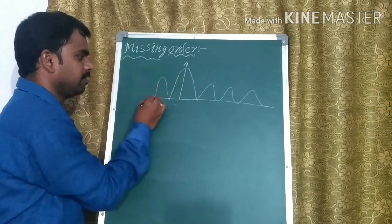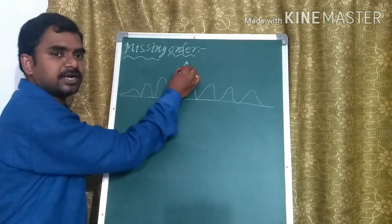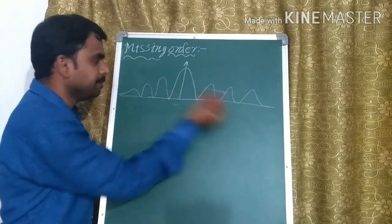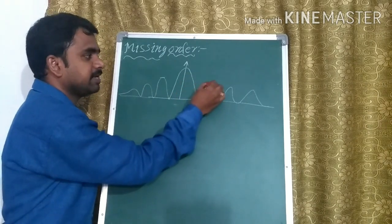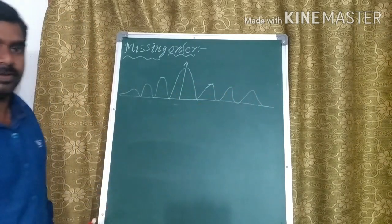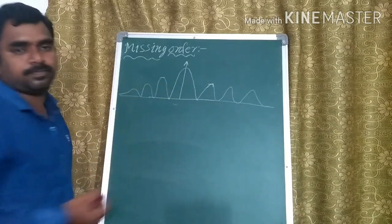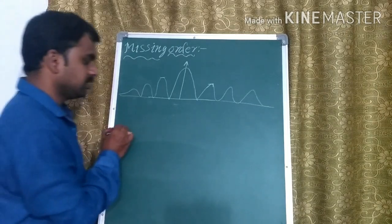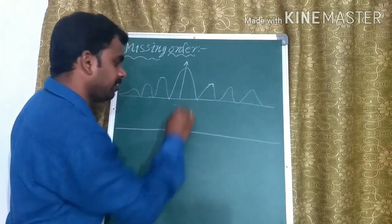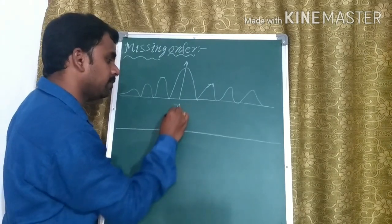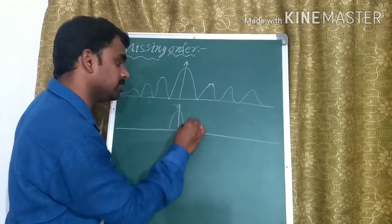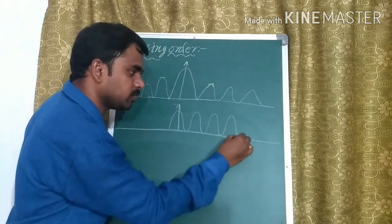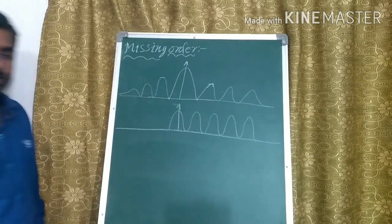The intensity varies like this. This is called as central maxima, this is called as minima, these are called as minimas. These are called as secondary maxima, third, and so on. This is the diffraction pattern. Same like that, if we take the interference pattern, all the bright fringes have maximum intensity and also the same intensity, and all the dark fringes have zero intensity — like this we get the intensity distribution curve.